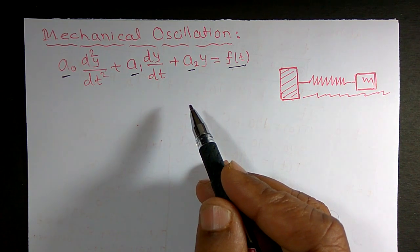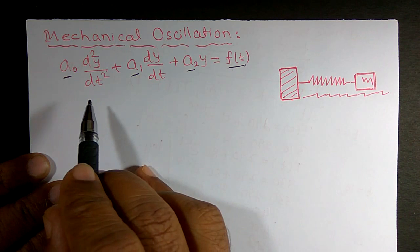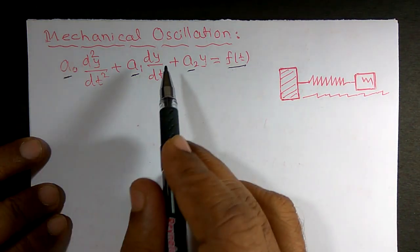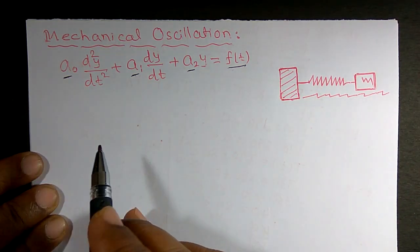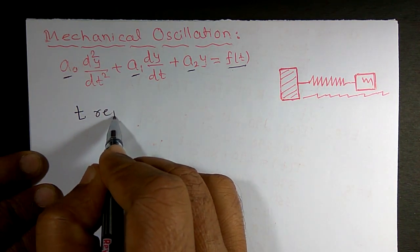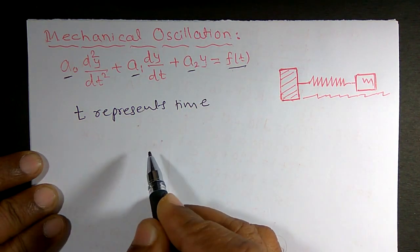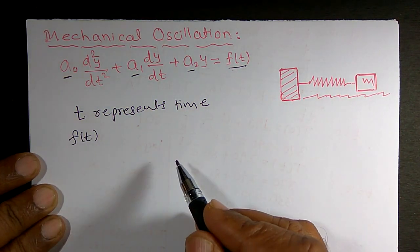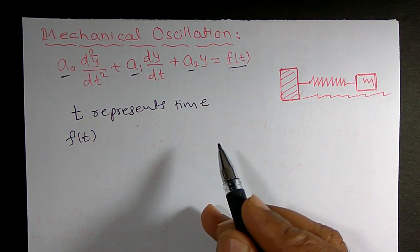Now before finding the solution of this equation, I can say that it is the mathematical model representing a mechanical oscillation. Here t, the variable t, represents time and f(t) represents as an external input to the system.